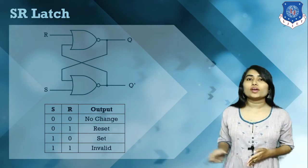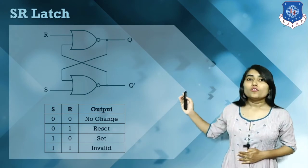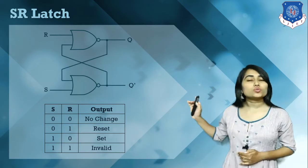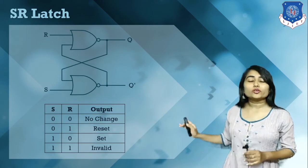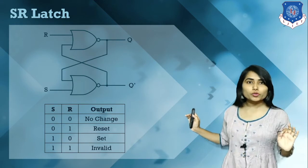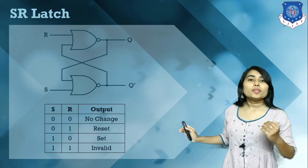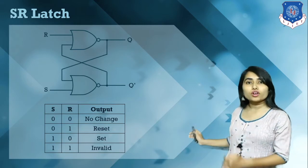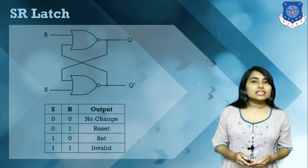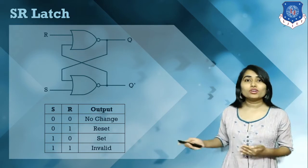So summarizing the characteristic table: when S and R equal 0,0 we have a no-change condition; when S=0 and R=1, we have reset — output equals 0; when S=1 and R=0, we have set — output equals 1; and when S=1 and R=1, we have an invalid state.